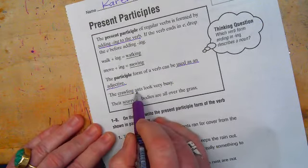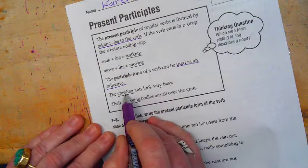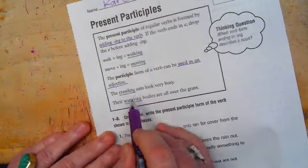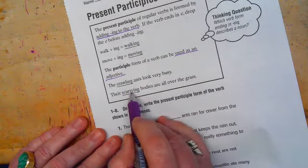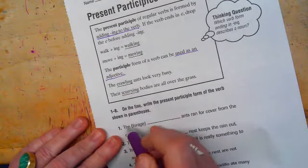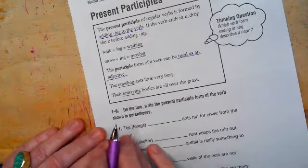Crawling is describing the ants, right? So it could be a verb. It could also be an adjective. Their scurrying bodies are all over the grass. Scurrying is describing what their bodies are doing, right? So it becomes an adjective.